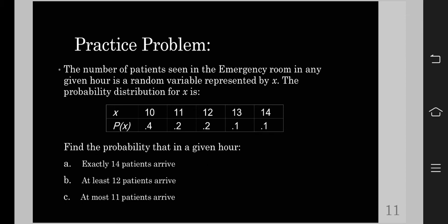As you can see, the minimum number of patients in a given hour in the emergency room is 10, and its maximum number of patients is 14. So the values for the random variable are 10, 11, 12, 13, and 14.